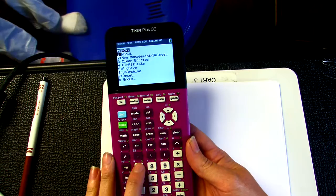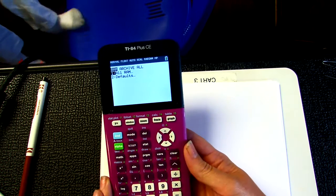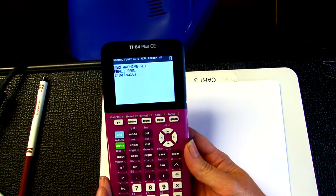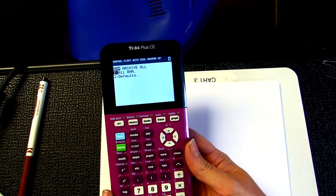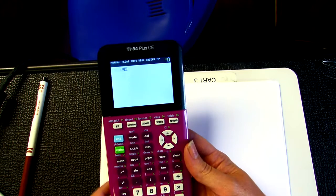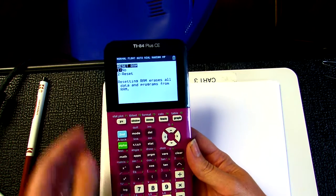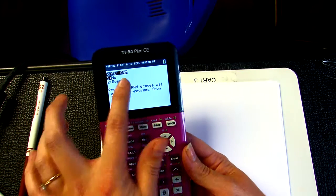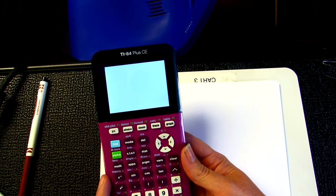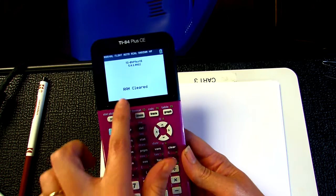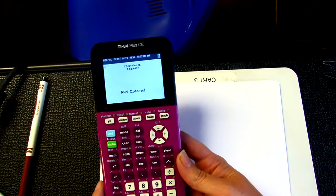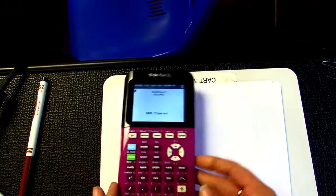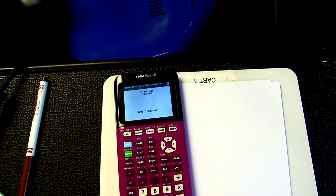The next button you're going to press is one for All RAM. After you press that, the screen will look like this. Then you're going to press button two for Reset. After you've done that, it will say RAM cleared. That's how you know you successfully cleared the memory. So again, the button sequence is Second, Plus, seven, one, two.